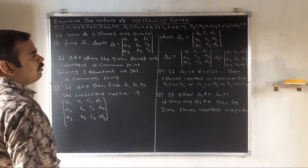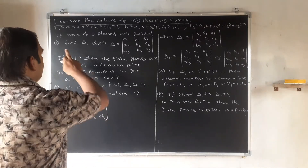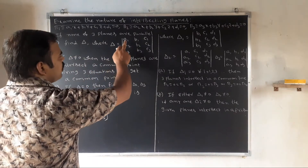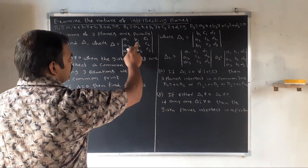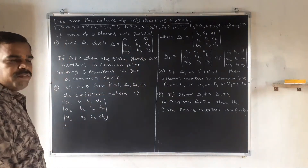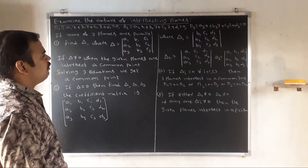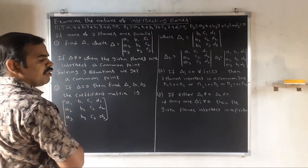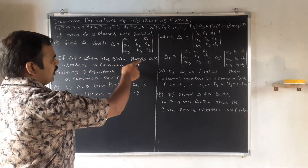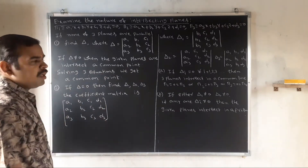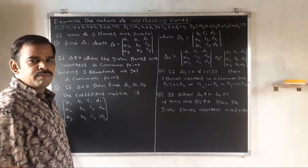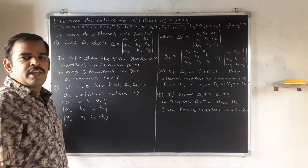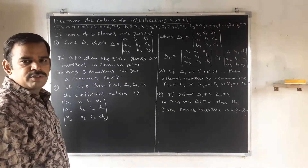If none of the three planes are parallel, first find delta, where delta is the determinant of the coefficient matrix with rows (a1, b1, c1), (a2, b2, c2), (a3, b3, c3). If delta is not equal to zero, the given planes intersect at a common point. To find that common point, solve the three equations simultaneously for x, y, z values.